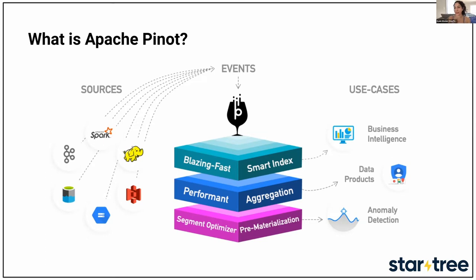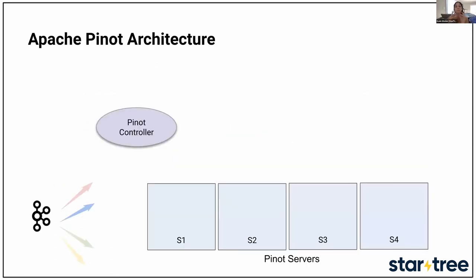Apache Pinot is an OLAP distributed data store. It gives you the ability to pull in data from a variety of sources — both streaming like Kafka, PubSub, or Kinesis, and batch sources like S3. You pull it into Pinot, which has powerful indexing capabilities and aggregation. It merges data into one consolidated view and makes it quickly accessible in real time to end users at scale. It also supports very high dimensionality, which is important for complex analytical queries.